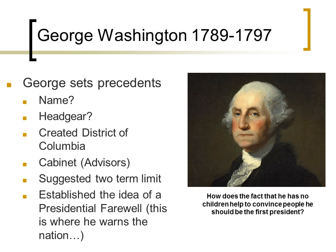Washington was one of the very few famous people alive during this time, making him the obvious choice for president. He also had another thing going for him: he did not have any of his own children. His wife Martha had children from a previous marriage, but George got smallpox when he was young and could not father children. This actually made him a better candidate — he had no heirs to hand the position off to, unlike kings whose eldest son typically inherits power.